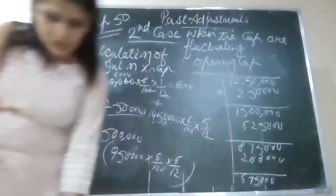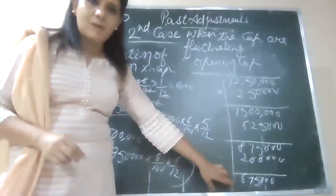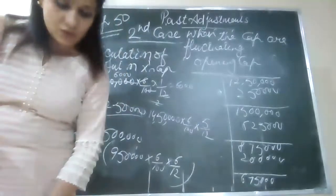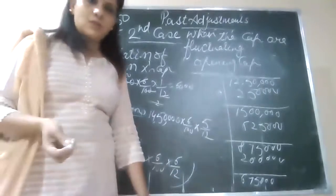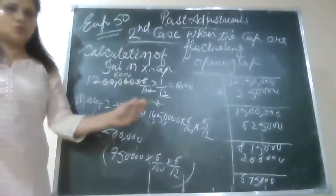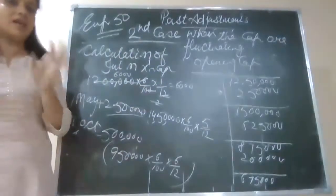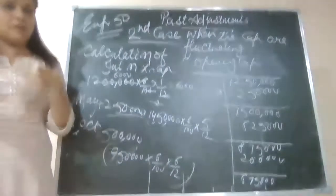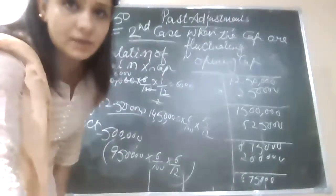Similarly, you will do for Y, taking 6,75,000 as the opening capital. Then he withdraws 125 first — make that minus, then calculate for the next 6 months. After that you will do it for past interest. This is a very complicated question; if it comes it will be 6 marks. Overall in this case we introduce interest on capital but treat it as a past adjustment entry.